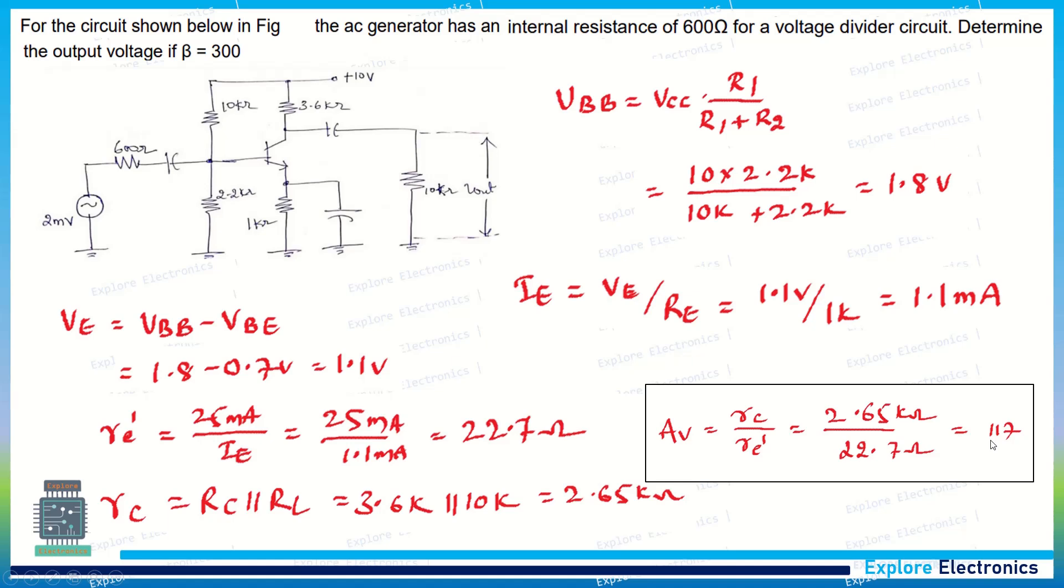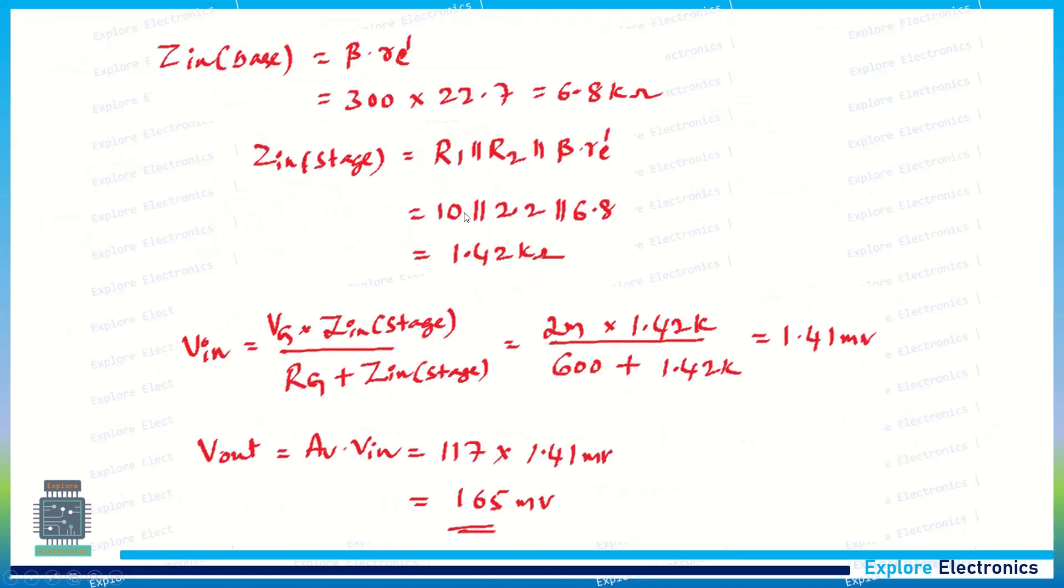Now the gain expression is Av equal to RC divided by re'. Putting RC and re' here, we get 117 as the gain. Now by using the gain, we can calculate the output for the input given 2 millivolts as VG.